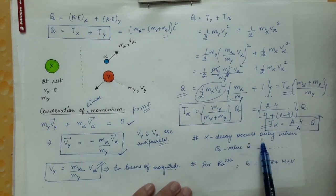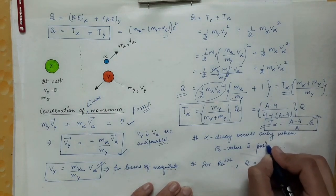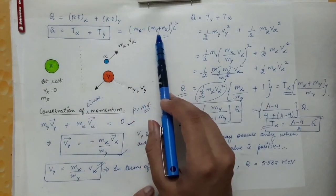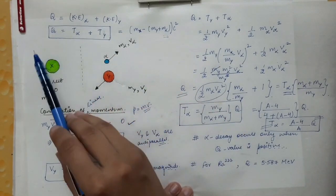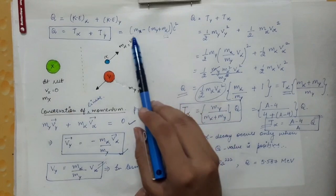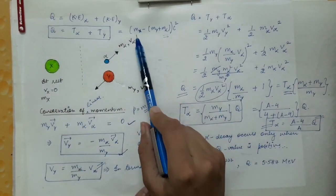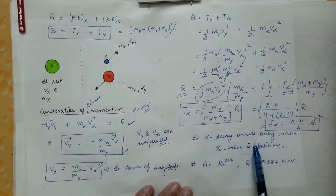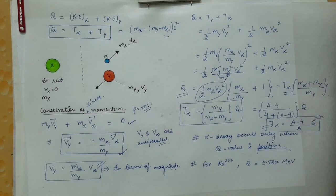Alpha decay occurs only when the Q value is positive. Q = (M_X − M_Y − M_alpha) × c², so for Q to be positive, the mass of the parent nucleus must be greater than the sum of the masses of the products. Alpha decay occurs only when energy is released.